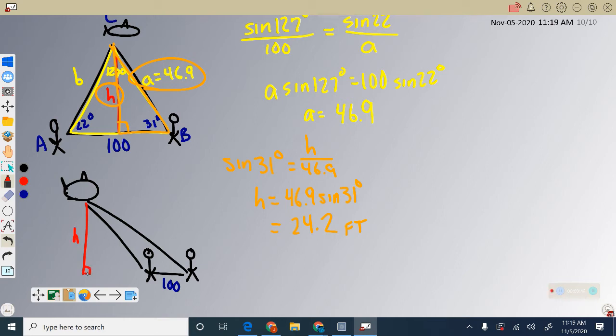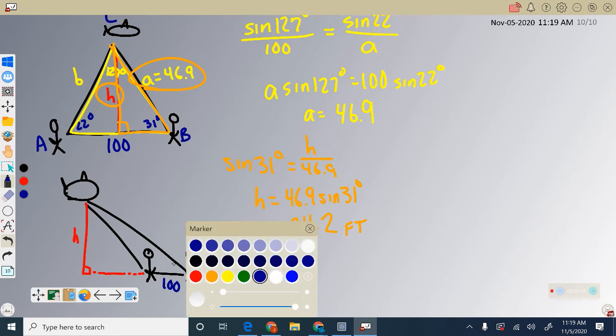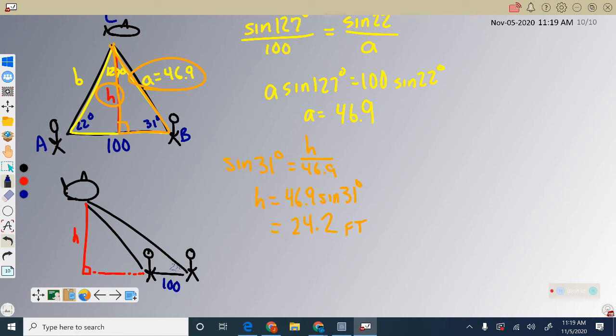We have this extra space that we don't have accounted for. We still know a couple of angles, 22 and 31 degrees. Where they go is very important. The further you go away, the smaller the angle. So the 22 degrees has to be here, and the 31 degrees has to be here. If you flip-flop those, you'll get a triangle that can't possibly occur.